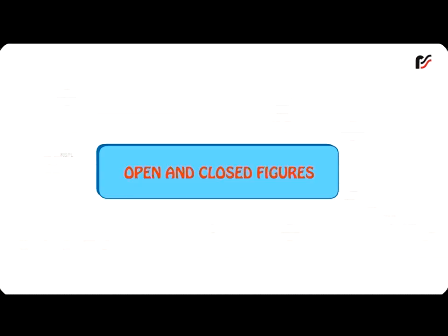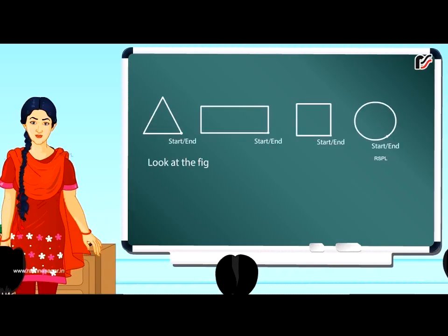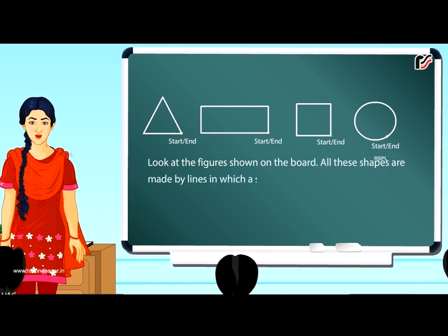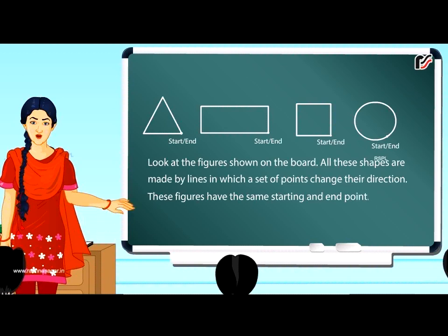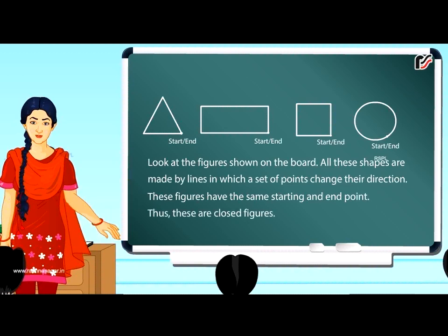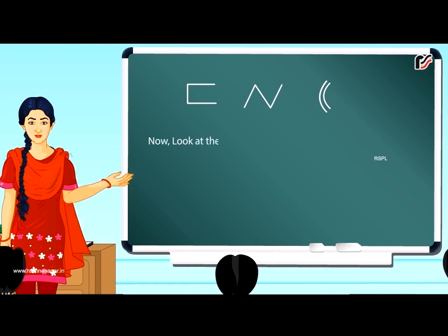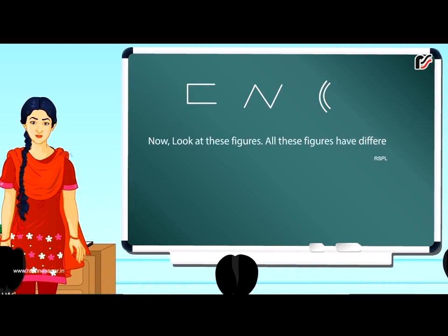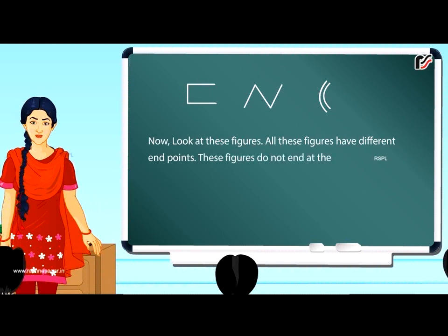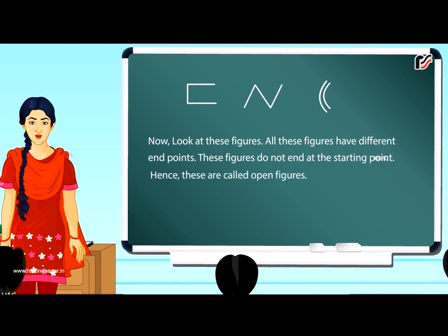Open and closed figures. Look at the figures shown on the board. These shapes are made by lines in which a set of points change their direction. These figures have the same starting and end point. Thus, these are closed figures. Now, look at these figures — all these figures have different end points and do not end at the starting point. Hence, these are called open figures.